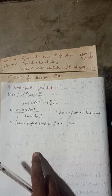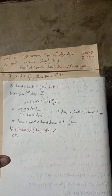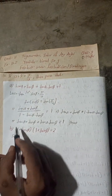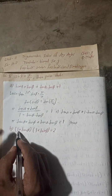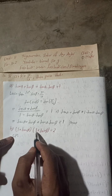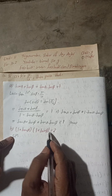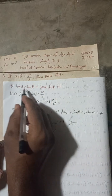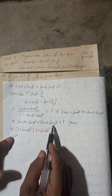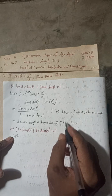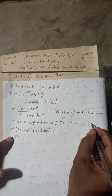Now let me do question 10b. We have to prove: (1 plus tan alpha) into (1 plus tan beta) is equal to 2. What we will do — in part A, we have proved that tan alpha plus tan beta plus tan alpha·tan beta equals 1. Let us call this equation 1.